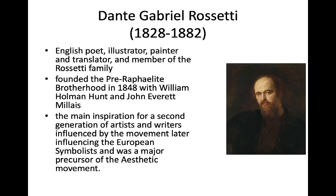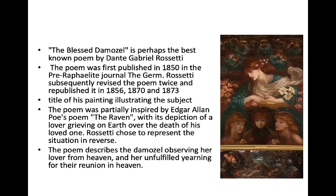DG Rossetti, Dante Gabriel Rossetti, is an English poet, illustrator, painter, and translator. He is a member of the famous Rossetti family — you may also remember his sister Christina Rossetti. He founded the famous Pre-Raphaelite Brotherhood in 1848 with William Holman Hunt and John Everett Millais, and he became a major inspiration for a second generation of artists and writers, and was a major precursor of the Aesthetic movement.